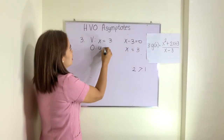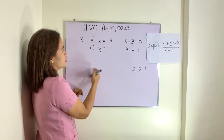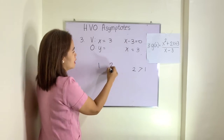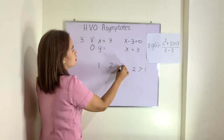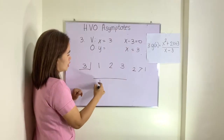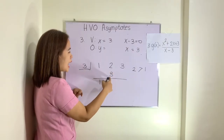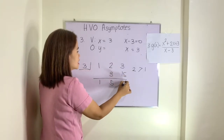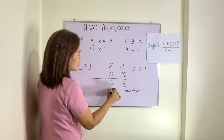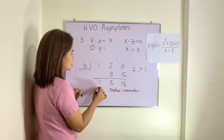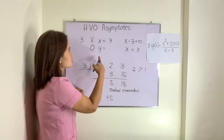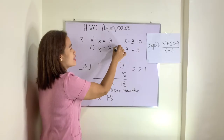To find the oblique asymptote — that is y equals something — divide the numerator by the denominator using synthetic division. Write the numerical coefficients of x squared, x, and the constant. The divisor is 3. Bring down 1, multiply to get 3, add to get 5 in the x column, multiply to get 15, and the remainder column gives 18. Ignoring the remainder, the oblique asymptote is y = x + 5.